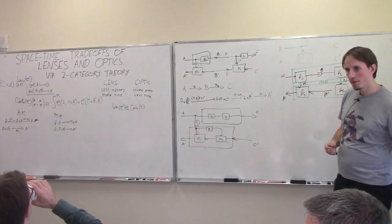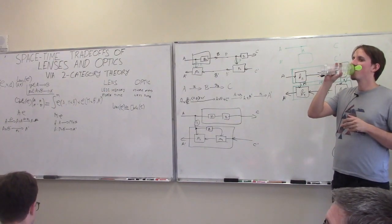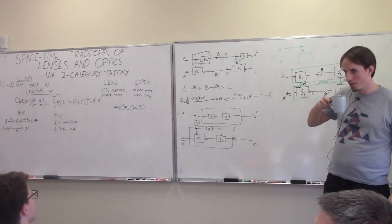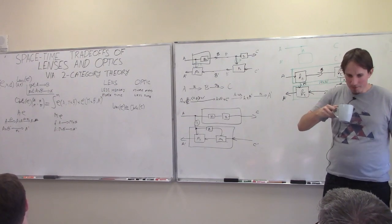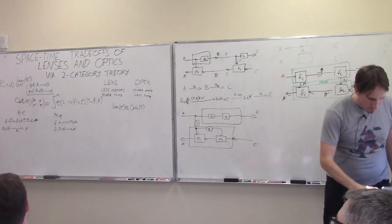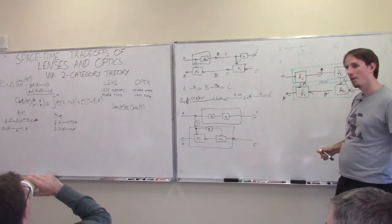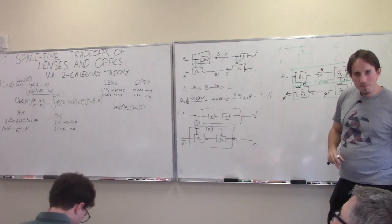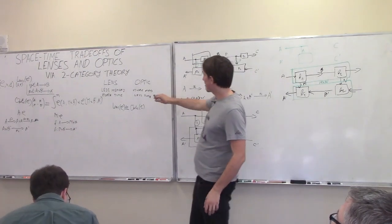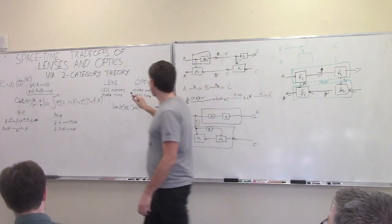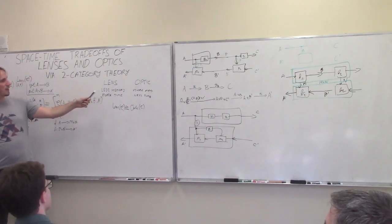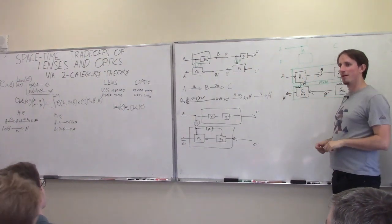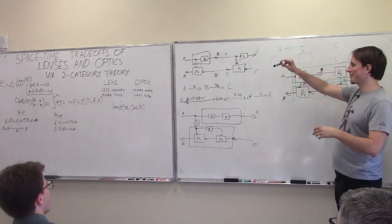Audience comment: I feel like optics aren't necessarily more memory — because if A is a tuple type, and your get map is a projection onto the first element, and your memory is the second element of the tuple, then you're actually storing less when updating the tuple. Speaker: That's a good point. I have to be more precise. What I mean is that as you compose these things in the Cartesian case, you're going to keep taking products.